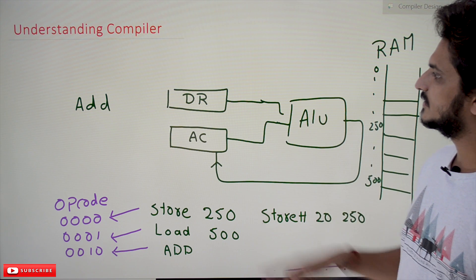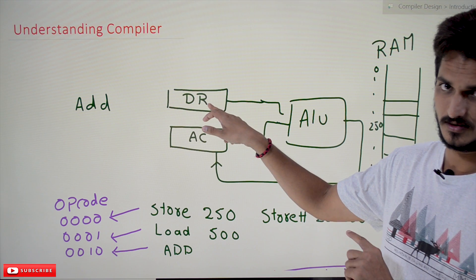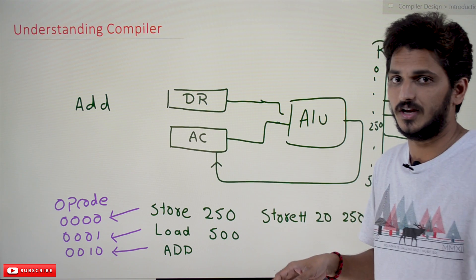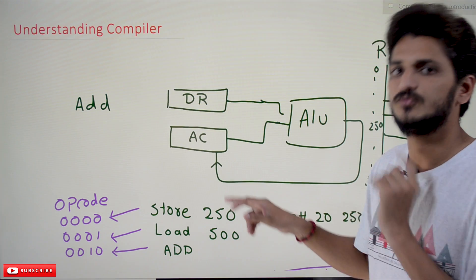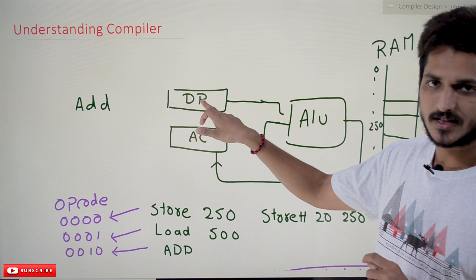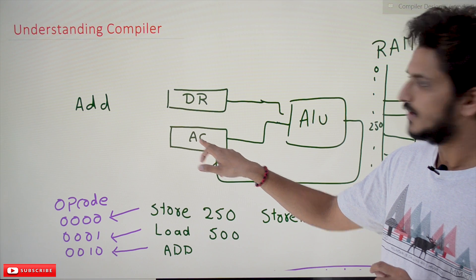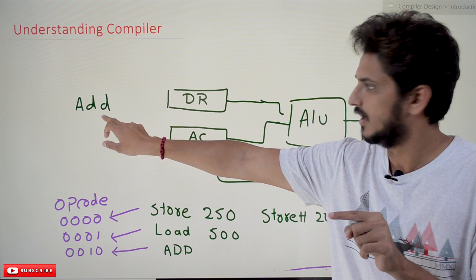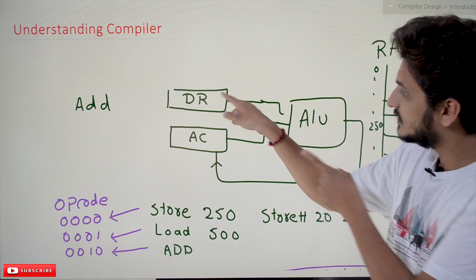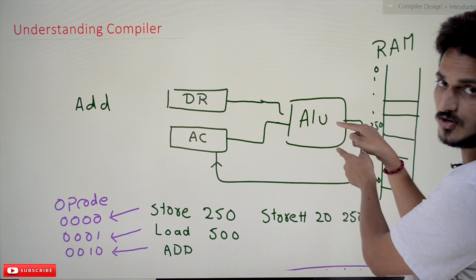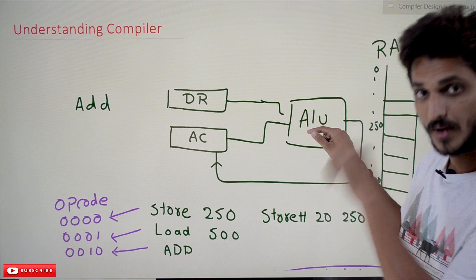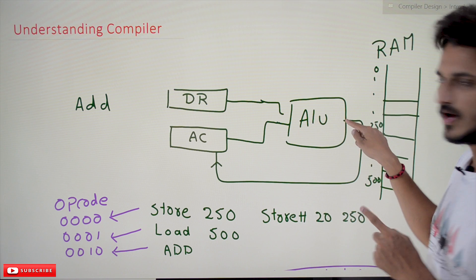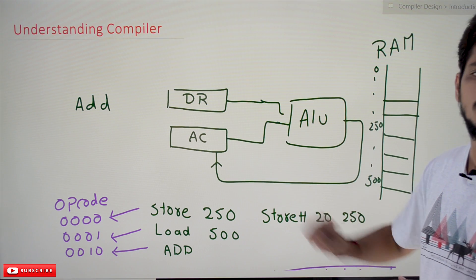What this processor has: we have a register called the data register and we have an accumulator. Suppose we take the example two plus five — if you want to do that, place two in the data register and place five in the accumulator. If you give the add instruction — a machine-level instruction — whatever is in these two registers goes to the ALU. It is going to perform the addition because we gave the add instruction, and the output, five plus two equals seven, is saved in the accumulator.